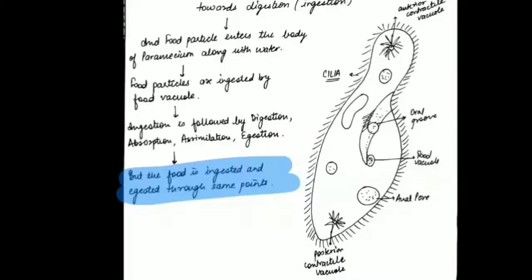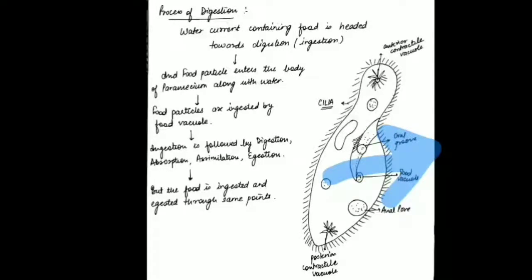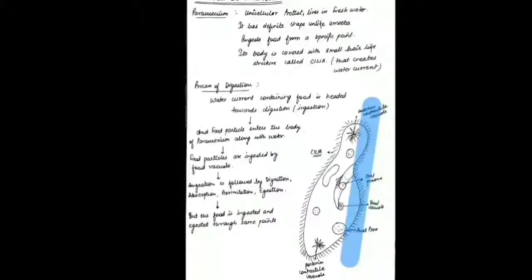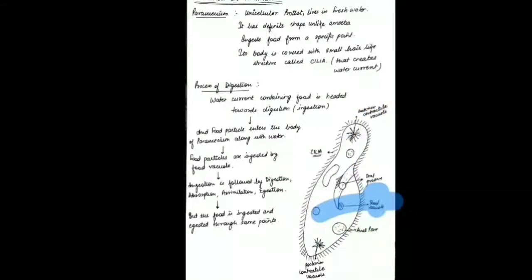While the digestion process in paramecium takes place, the cilia keep functioning and help paramecium move. The contractile vacuoles also support its movement. The food vacuole that formed helped in digestion, absorption, assimilation, and finally egestion — the undigested food material exits through the anal pore on the surface of paramecium. Unlike amoeba, egestion and ingestion occur through specific fixed points, and locomotion is done by cilia, the hair-like structures present on the outer body surface.